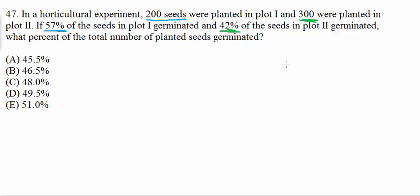So now we need to figure out what percent of the total number germinated. So our total number of seeds is going to be this 200 plus this 300. So I'm going to go ahead and write that in purple. So our total seeds equals, sorry about my poor handwriting, 200 plus 300 equals 500.